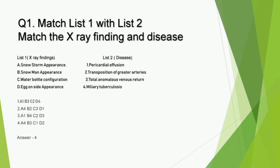Question number 1 is a match the following type question. In list 1, we have 4 x-ray findings and we have to match them with their corresponding disease in list 2. A - snowstorm appearance is related to miliary tuberculosis. B - snowman appearance is related to total anomalous pulmonary venous return. C - water bottle configuration is related to pericardial effusion. And D - egg-on-side appearance is related to transposition of greater arteries. These are typically chest x-rays and the correct answer is option 4.